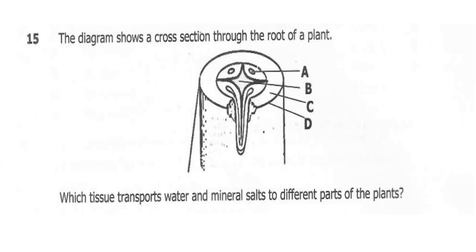Question 15. The diagram shows a cross section through a root of a plant. Which tissue transports water and mineral salts to different parts of the plant? The correct answer here is B, which is the xylem vessel. The xylem will be at the center of the root in a star-shaped arrangement in the dicot root. The part which transports water and mineral salts is the xylem vessel.